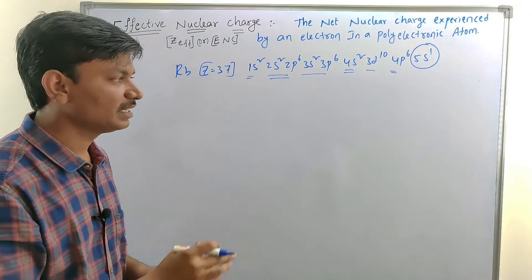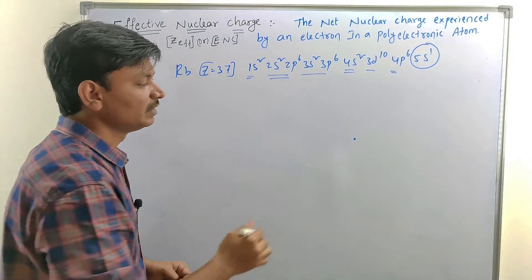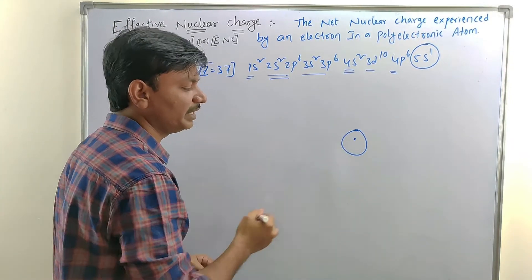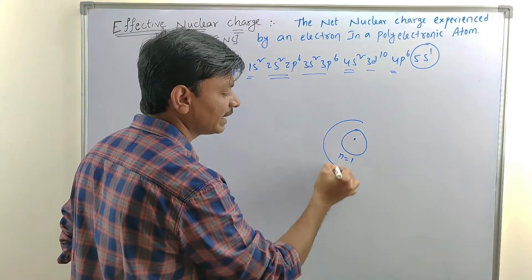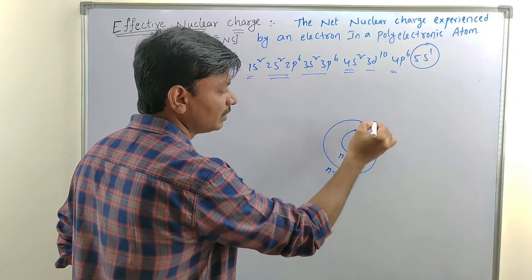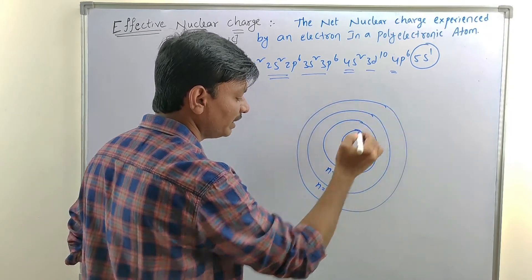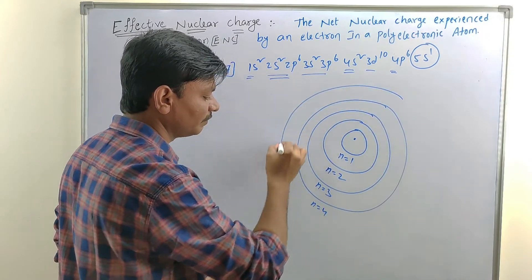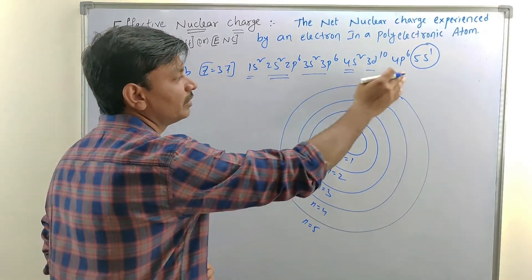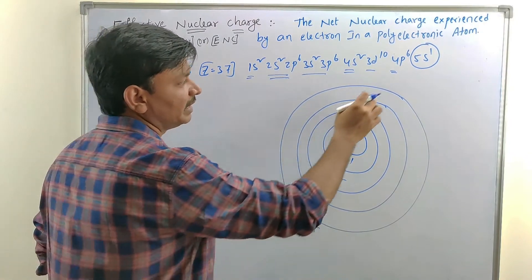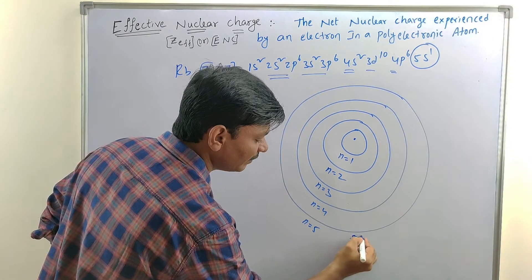This electronic configuration is represented in shells. Here is the nucleus of rubidium. The 1st shell is n=1, 2nd shell is n=2, 3rd shell is n=3, 4th shell is n=4, and the 5th shell is n=5. Rubidium has a total of 5 shells. In the 5th shell, there is only the S subshell — that is 5s1, with only 1 electron.